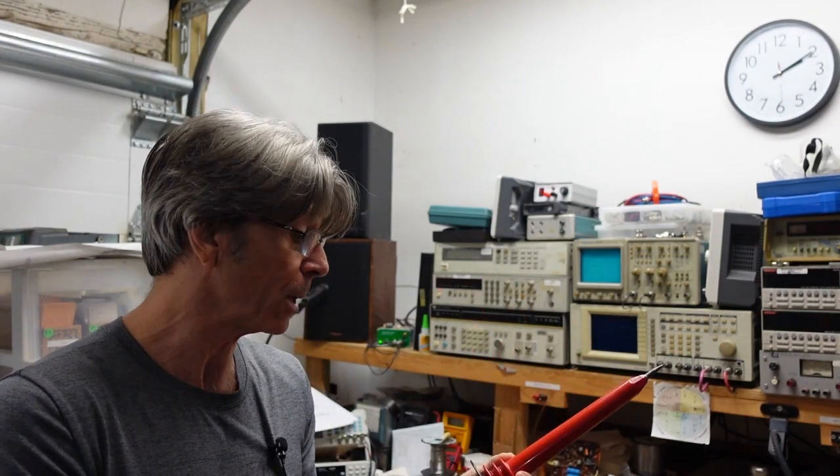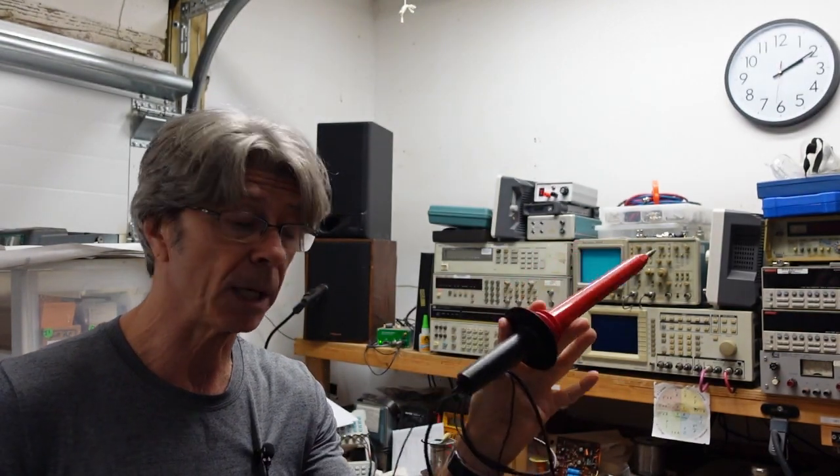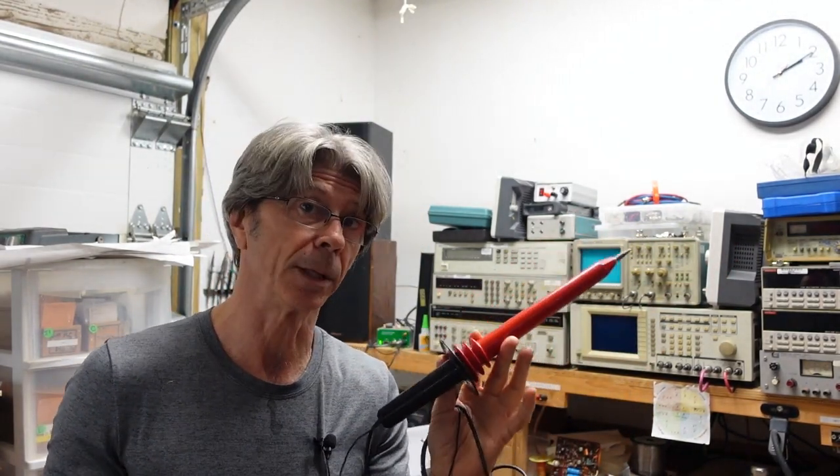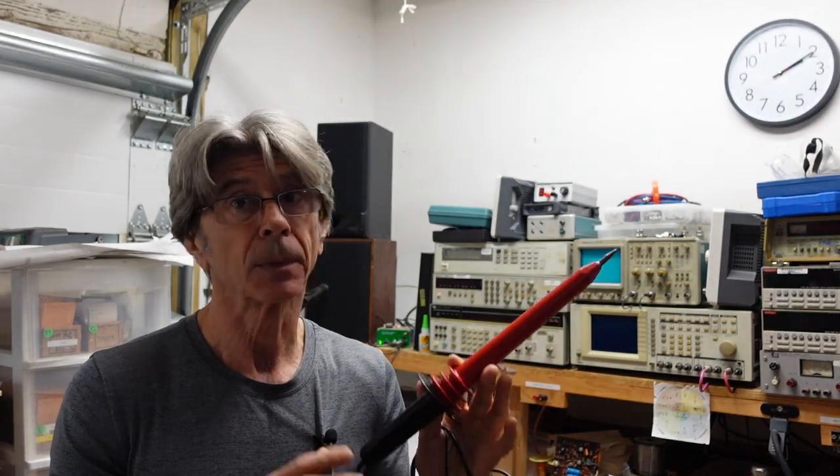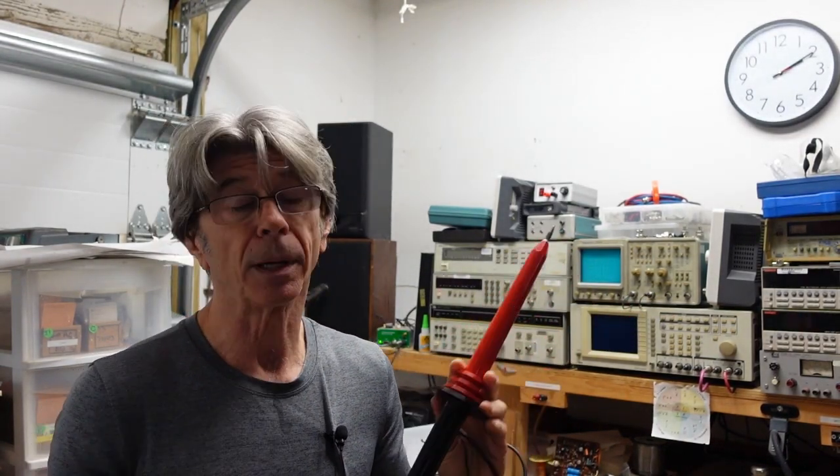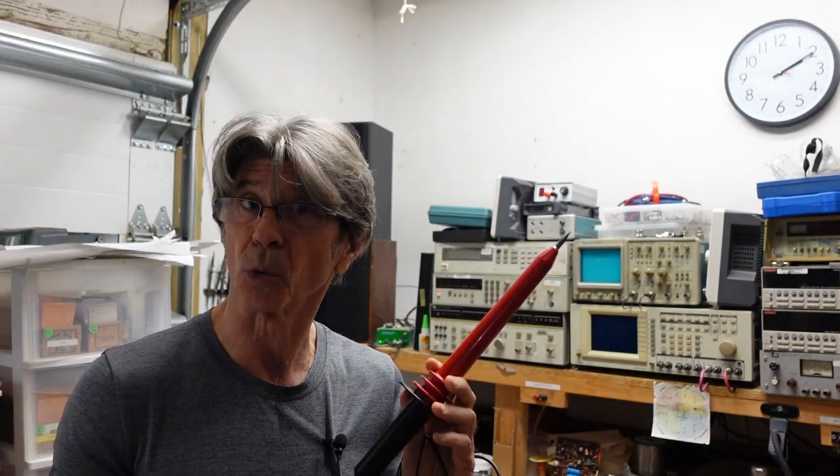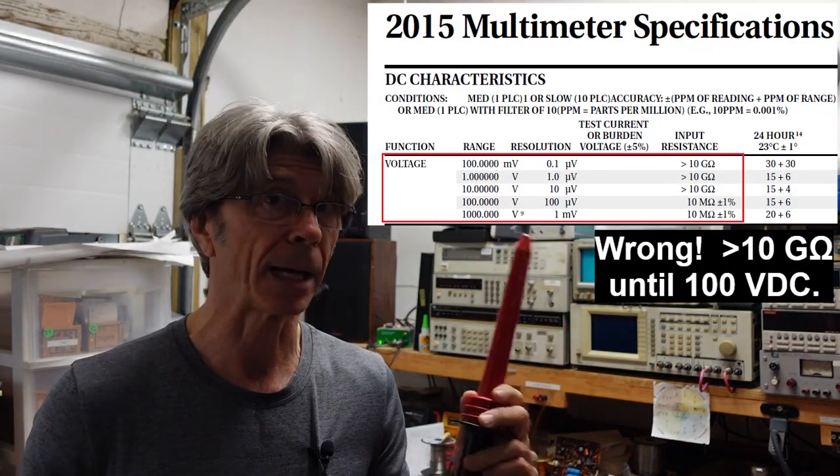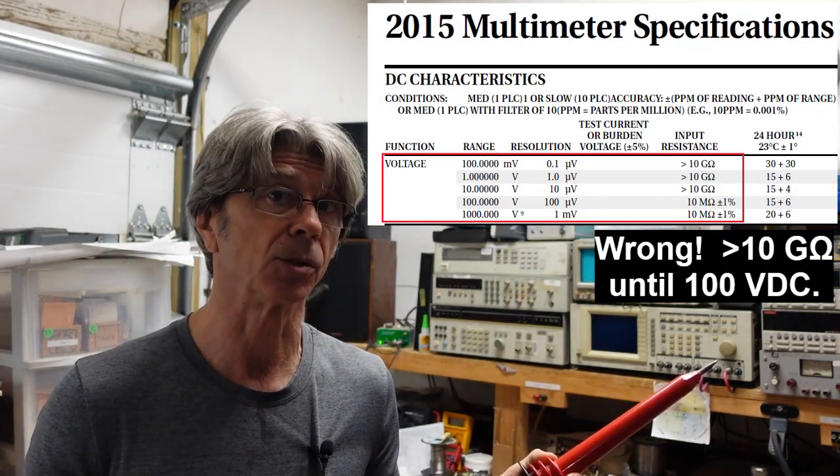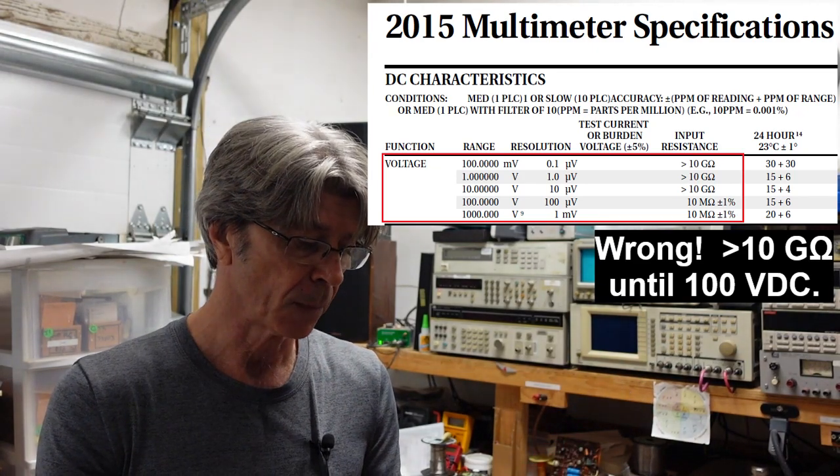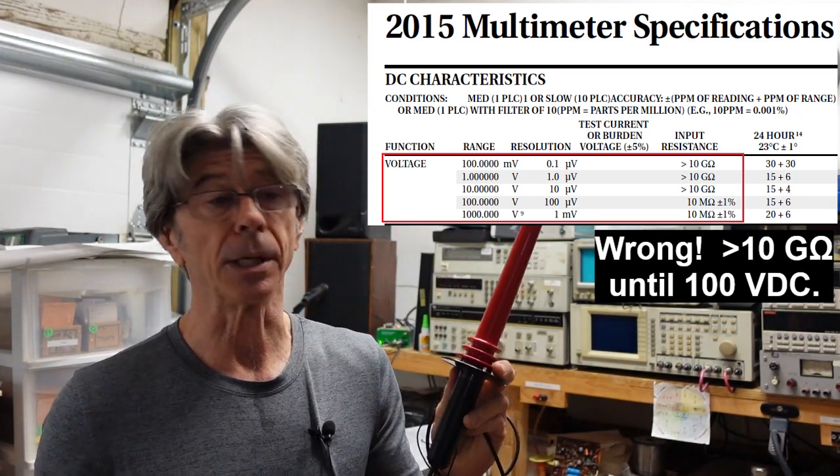I bought this one many years ago when I used to service CRT based televisions. This is a Fluke 80K-40, and the dash 40 suffix indicates that this probe is good up to 40 kilovolt peak. Essentially what this probe does is it creates a voltage divider using the input impedance of the meter, so it's very important that your meter is 10 megohm.